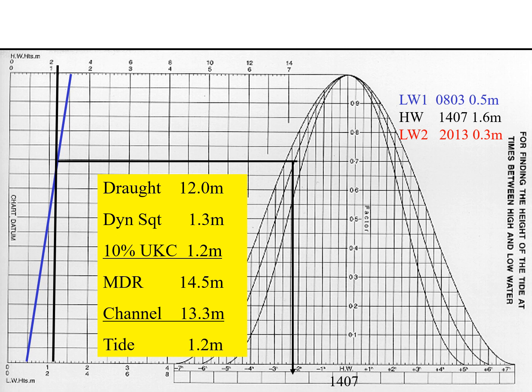We do the same for the next interval. We join low water 2 (0.3 meters) to the high water, giving the red line. Again at our required height of tide of 1.2 meters, wherever the black line intersects the red line, we draw a horizontal line. Low water 2 at 2013 is almost six hours after high water, so we extend to the curve for six hours after high water and drop a perpendicular, giving another safe transit time.